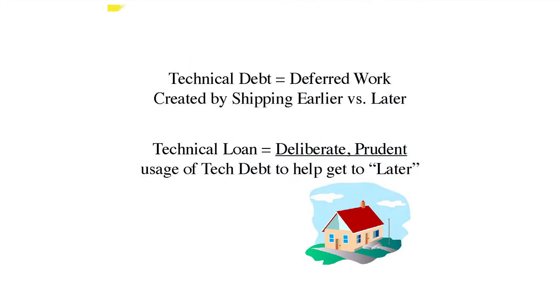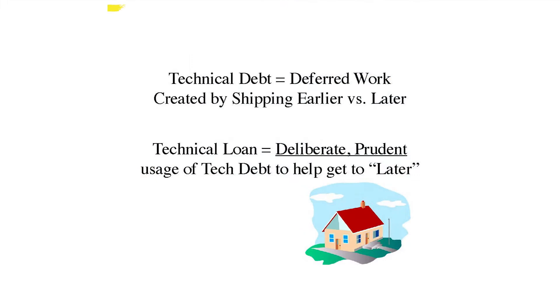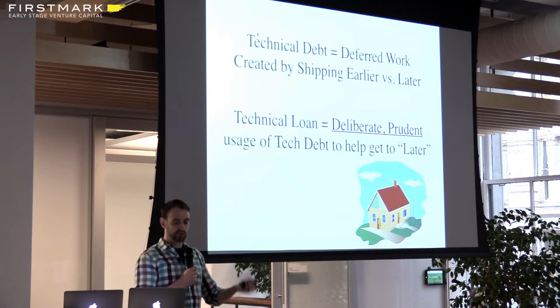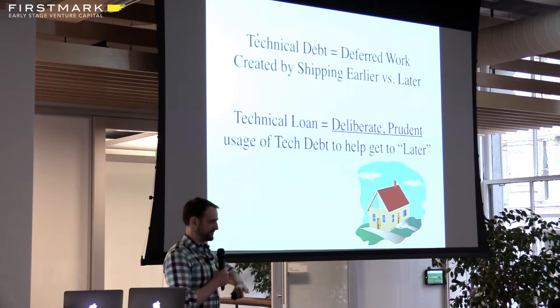I'm going to propose a term — 'technical loan' — to describe the upper right quadrant. If technical debt is deferred work created by shipping earlier versus later, then technical loan is that deliberate, prudent use of delaying work. Think of it like a home loan: that kind of debt can be good in the sense that when handled correctly, you can get further than you could with no debt at all. Just be careful that you don't create your own subprime mortgage crisis.